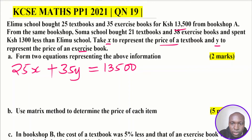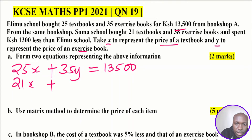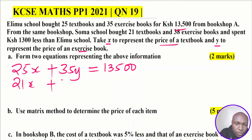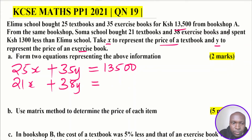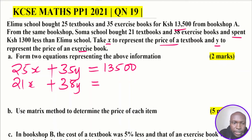Soma School bought 21 textbooks, so the total cost for textbooks is 21X, and 38 exercise books, giving a total of 38Y for the exercise books. Given that Soma School spent 1,300 less than Elamu School, we subtract 1,300 from 13,500.